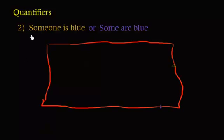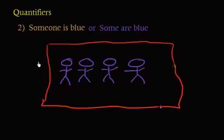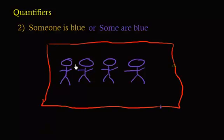For our next quantifier, we're going over the word someone. You can say someone is blue, or you can say some are blue — they both mean the same thing. Using the room example, I claim someone is blue and everyone is blue. Have I lied? If I say someone is blue, the only thing you should be expecting is that at least someone in here is blue, because someone means at least one. You walk in, at least one is blue, so no lie. Don't think the negation of someone is blue is everyone is blue — someone is blue is just a weaker statement.